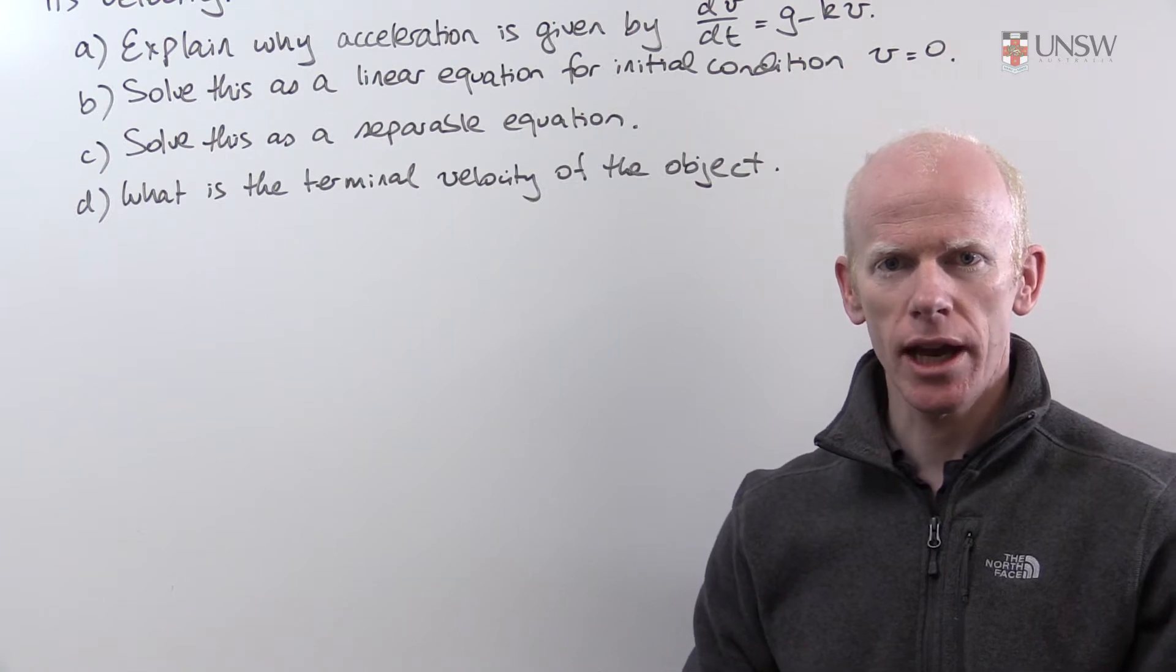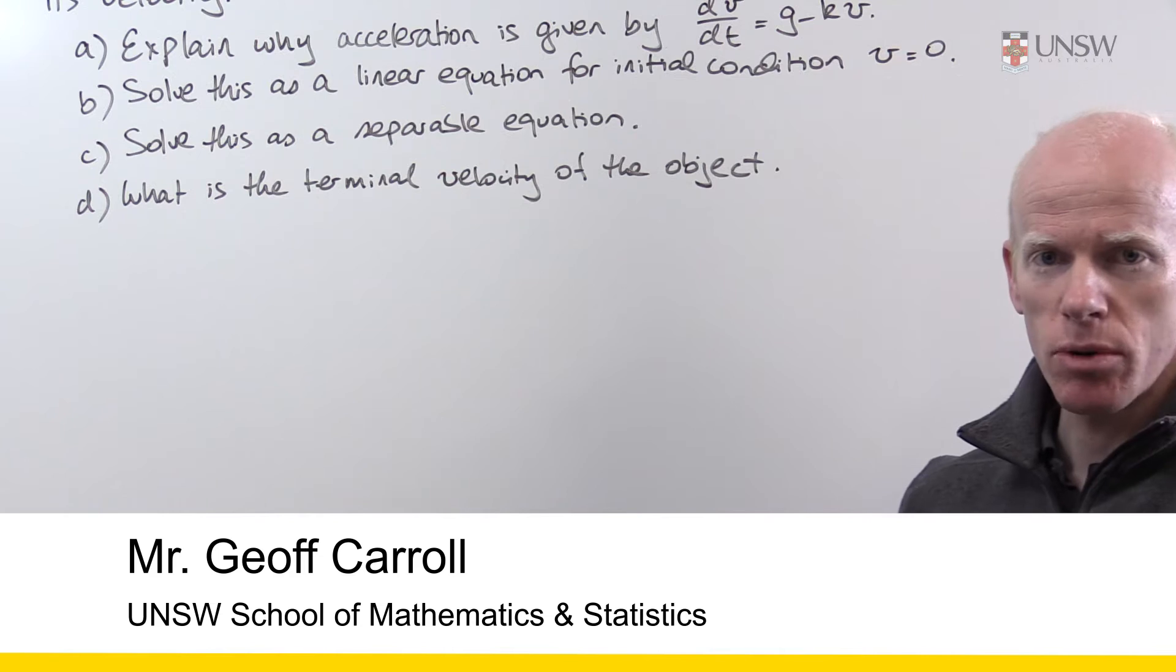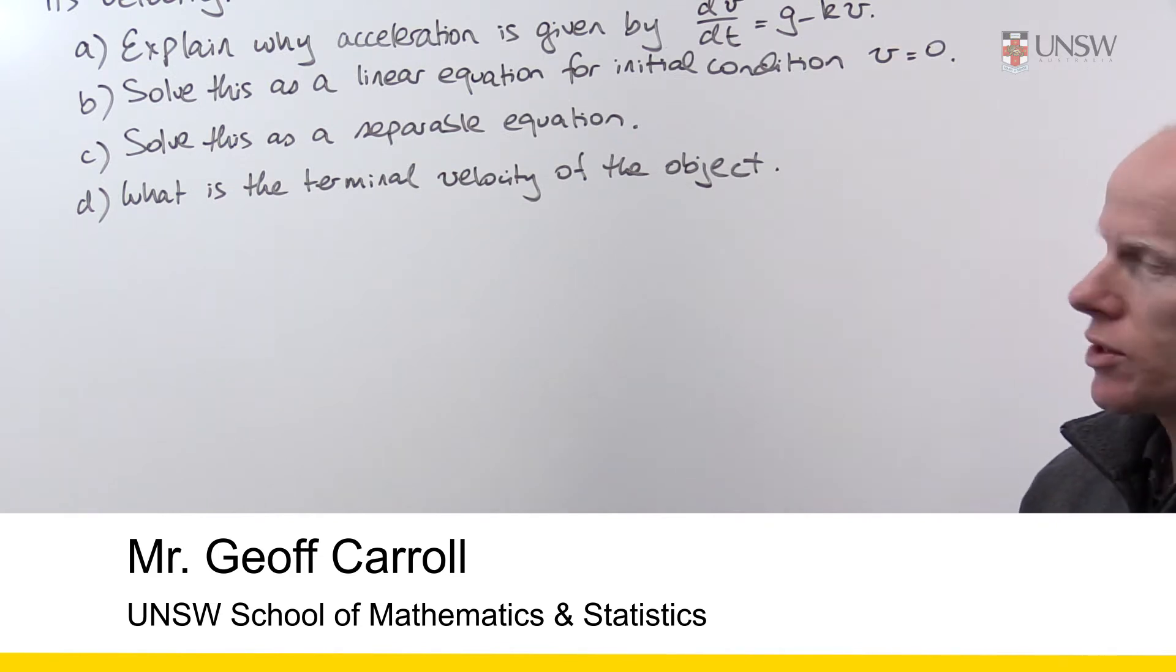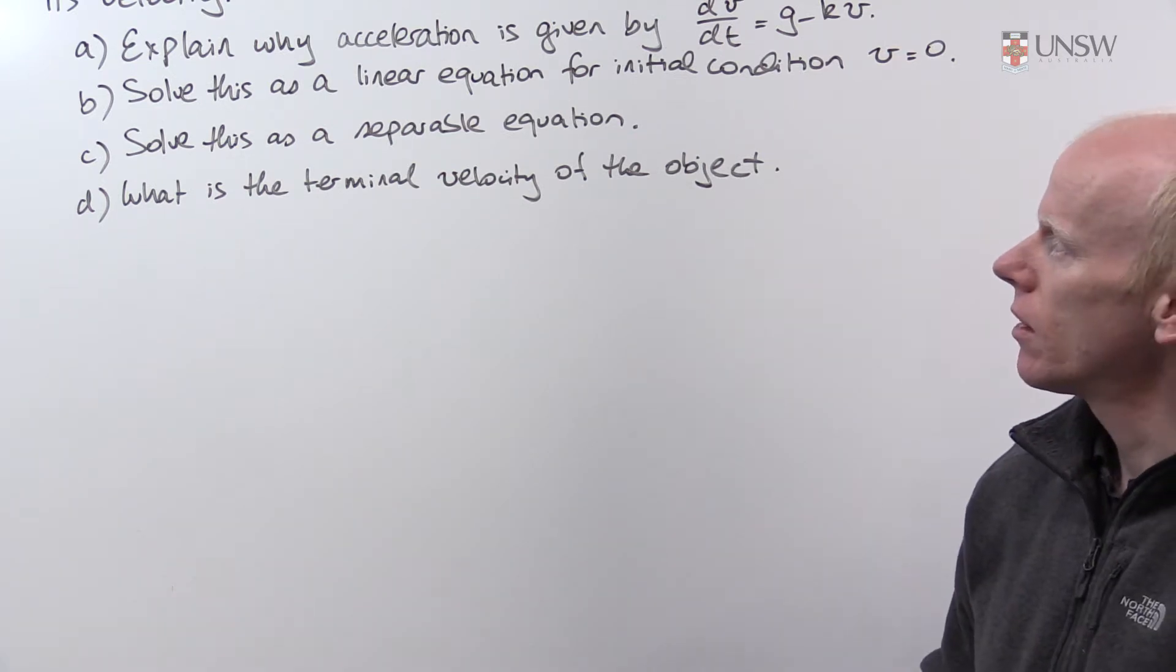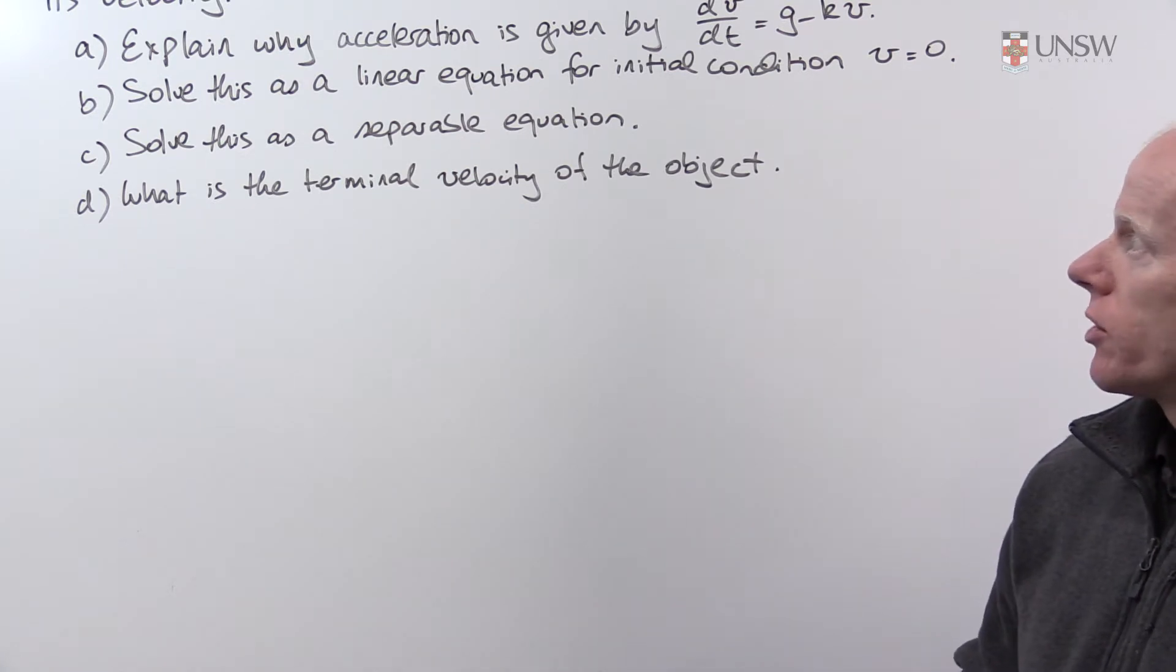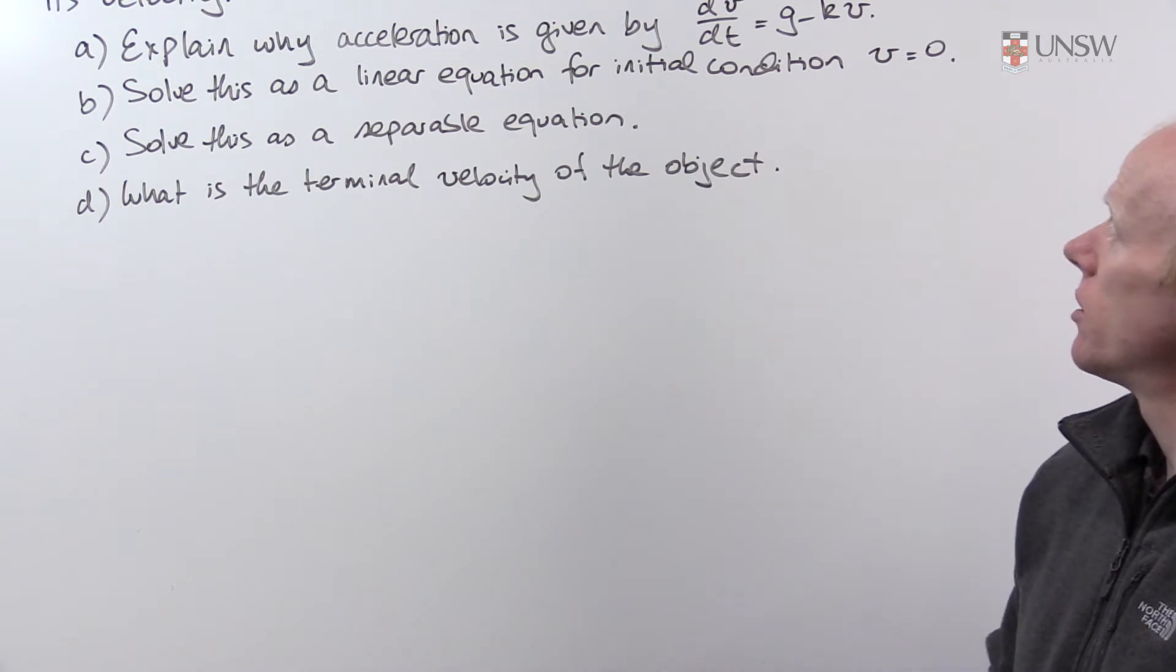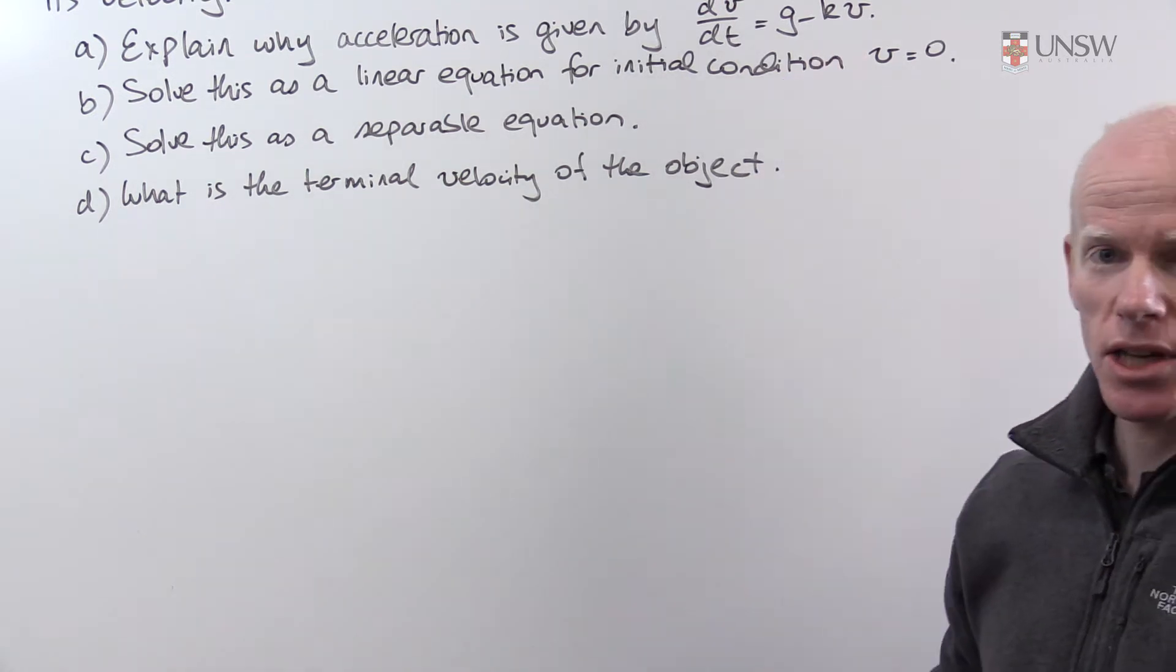In this question we are looking at a falling object that experiences a resistance that is proportional to velocity. Part A, we need to explain why the acceleration of the object is given by this linear differential equation dv/dt equals g minus kv.